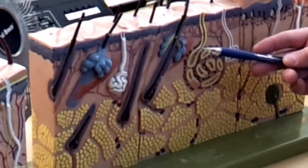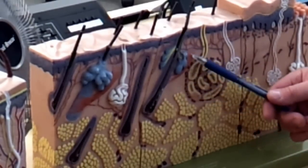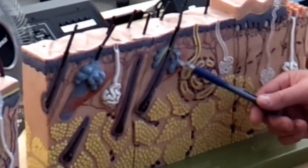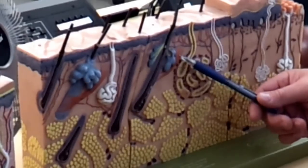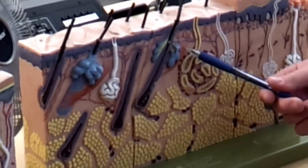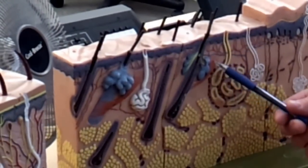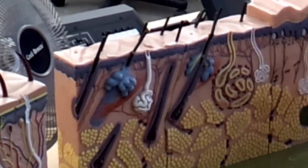On this hair follicle, helping with thermoregulation would be the erector pili smooth muscle. Notice it's on the same side as the sebaceous gland here, and as that muscle contracts, heat production would occur and our hair would stand upright. We would get goosebumps, and that helps to thermoregulate as we go outside into cold temperatures.